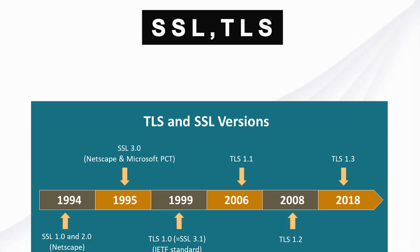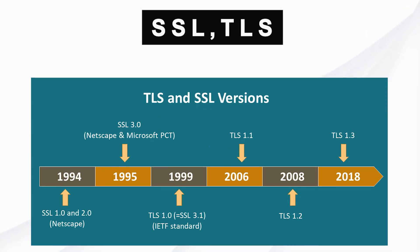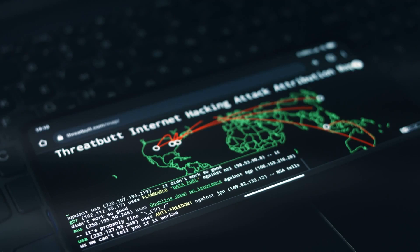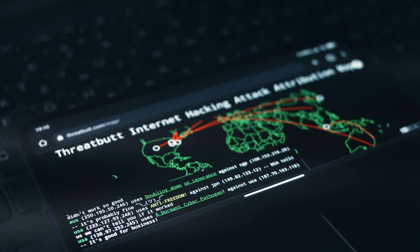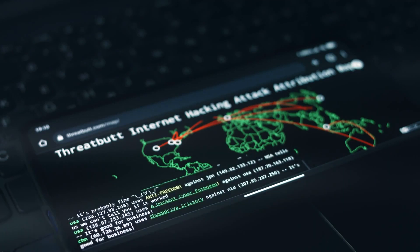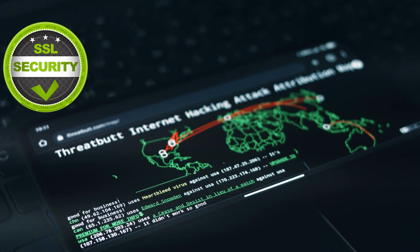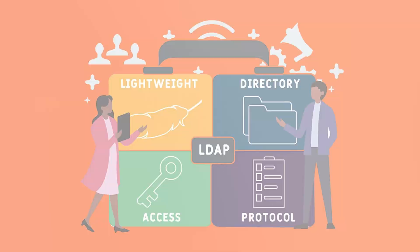We can't forget about SSL and TLS — the protocols that secure your web traffic. They're like the locks on your internet communications. Imagine whispering secrets in a crowded room; if someone doesn't have the right key, they can't eavesdrop. But an attack called SSL stripping can downgrade that lock, making it easier to crack.